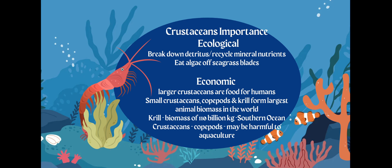Economically, we're talking about money. Larger crustaceans — of course — we're going to sell them for food. Humans love lobsters, so why not sell them for food? Small crustaceans, like our copepods and our krill, they're actually going to be the largest amount of biomass that increases all of the food webs around the world. For example, krill biomass: there's 110 billion kilograms in the Southern Ocean. That's what a lot of our organisms that live in the water rely on. So if we did not have as many krill, we would start to see the decline in our food webs.